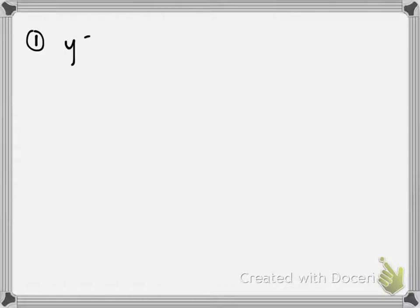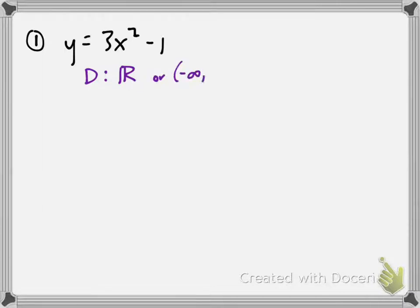Let's do a couple of examples. The first example is y equals 3x squared minus 1. You should immediately recognize this is a polynomial function — specifically a quadratic — and so the domain is all real numbers. Using interval notation, the domain is from negative infinity to infinity.